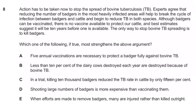Let's go through this. First, find the conclusion. 'Action has to be taken now to stop the spread of bovine TB' — that's a strong opinion. 'Experts agree that reducing badger numbers helps break the cycle' — that's fact, cross it out. 'Although badgers can be vaccinated, there is no vaccine for cattle and it will be 10 years before one is available' — that's fact, cross it out. 'The only way to stop bovine TB spreading is to kill badgers' — that's a strong opinion that ties in with the first statement.